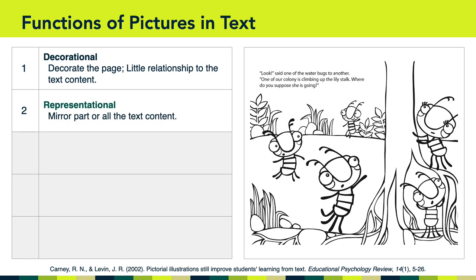Another function of pictures in text is representational. The purpose of representational pictures is to mirror part or all of the text content. Here's a screenshot from a children's book. The text says, 'Look,' said one of the water bugs to another, 'one of our colony is climbing up the lily stalk. Where do you suppose she is going?' If we look at the picture, we can see the water bugs at the bottom of what is presumably the lily stalk and they're looking up. There's a mirroring between the dialogue in the text and what is actually being depicted in the picture. That's an example of the representational function of pictures in text.